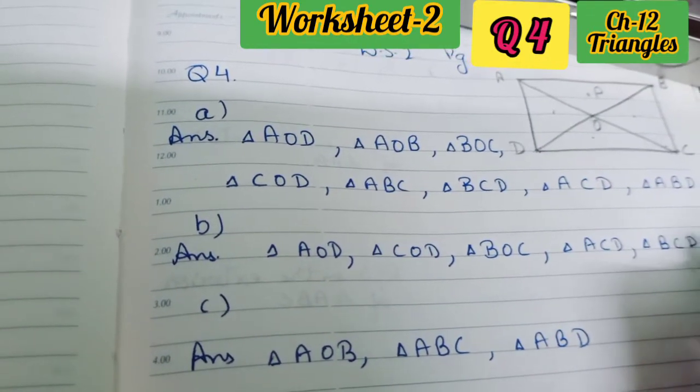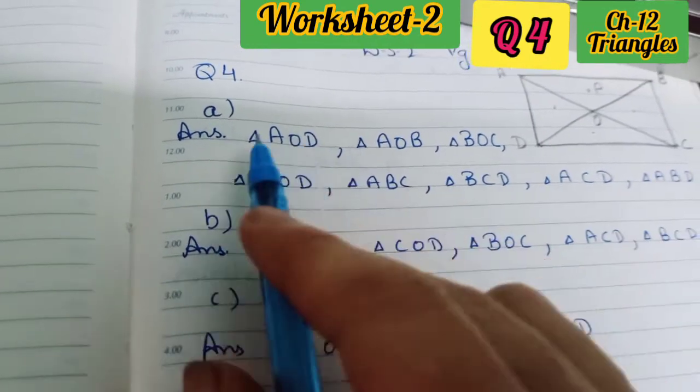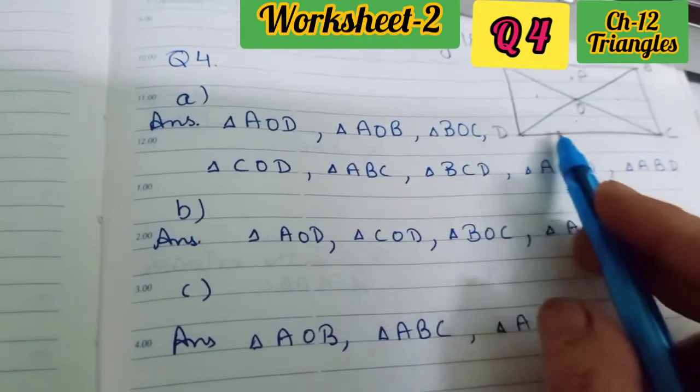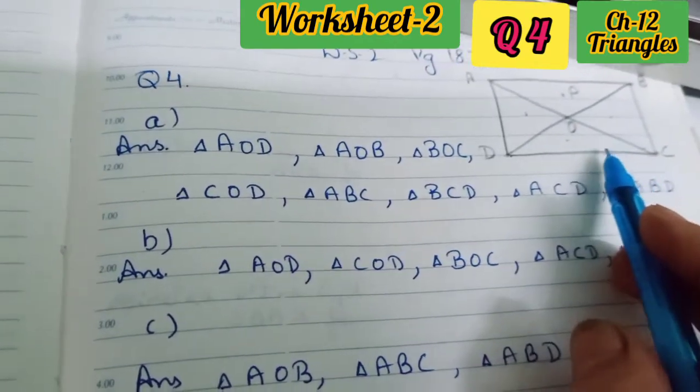Next, the triangles which have point P in its interior: triangle AOB, triangle ABC, and triangle ABD. In these triangles P is in the interior, while here P is in the exterior. These are the triangles formed in this figure.